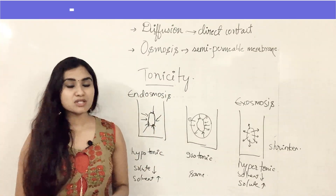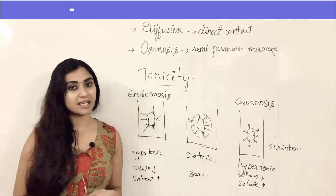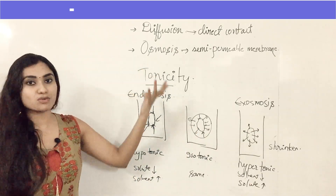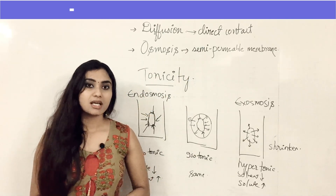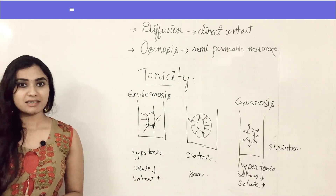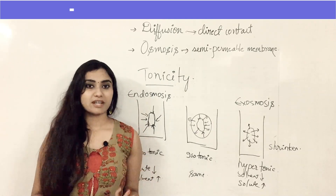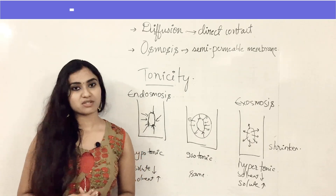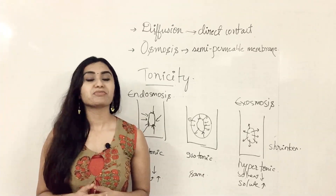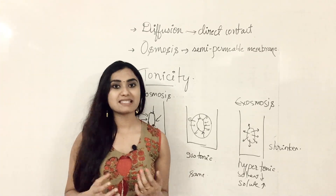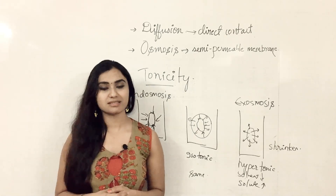So that is what happens when you place a cell in three different types of solutions. We can conclude that osmosis is a special case of diffusion that occurs through a semi-permeable membrane. In the next class we will study different types of cell organelles, their structure and function. Hope you liked this video — please like, share, and subscribe to our channel.